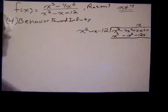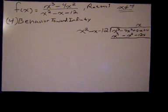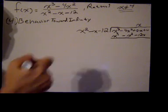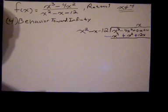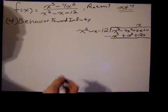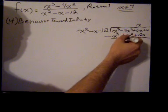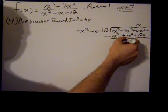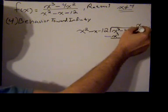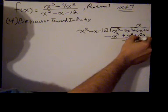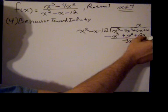So now we subtract. I'm going to use a different color. When we subtract, this becomes a negative, this becomes a positive, this becomes a positive. So we subtract, and x cubed minus x cubed is 0, negative 4x squared plus x squared is negative 3x squared, and then 0x plus 12x is just plus 12x.